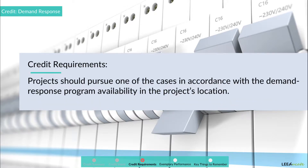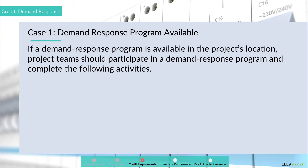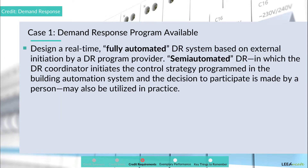Projects should pursue one of the cases in accordance with the demand response program availability in the project's location. Case 1: demand response program available. If a demand response program is available in the project's location, project teams should participate in a demand response program and complete the following activities. Activity 1: design a real-time, fully automated DR system based on external initiation by a DR program provider. Semi-automated DR, in which the DR coordinator initiates the control strategy programmed in the building automation system and the decision to participate is made by a person, may also be utilized in practice.